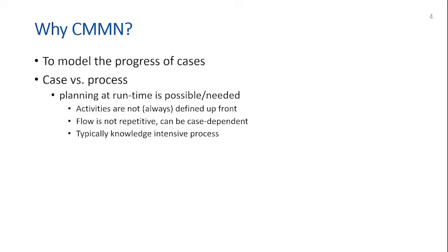Cases are a bit different from processes. For cases, we assume that some form of planning at runtime is possible and also needed. In contrast to processes, where all the activities and their sequence are defined upfront, for a case, the activities are not always defined upfront. You have, for example, a collection of activities — say A, B, C, D, E, F.